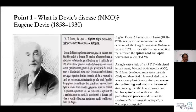Eugene Devic was a French neurologist from Lyon, France. In the year 1894, he described this condition in a patient he saw — a 45-year-old woman who came to him with bilateral visual impairment, and he found that the patient had something like optic neuritis. Then, two months later, the same woman came back with something which looked like myelitis.